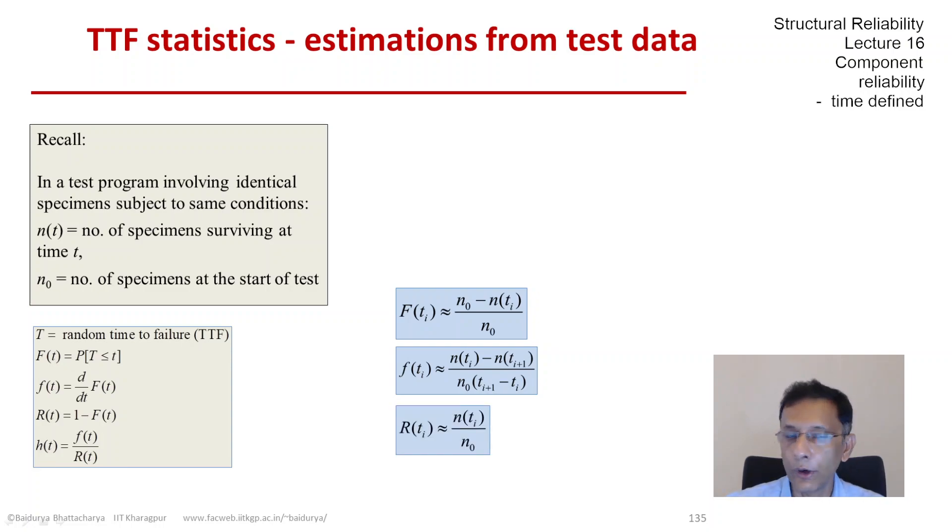The complement of the CDF gives me the reliability function. So the fractional number of items that are surviving at time Ti. And then finally, the hazard function, which is the ratio of the density function over the reliability function. And that is the increment in n between Ti and Ti plus 1 and normalized by the number of surviving elements at Ti over the time interval.